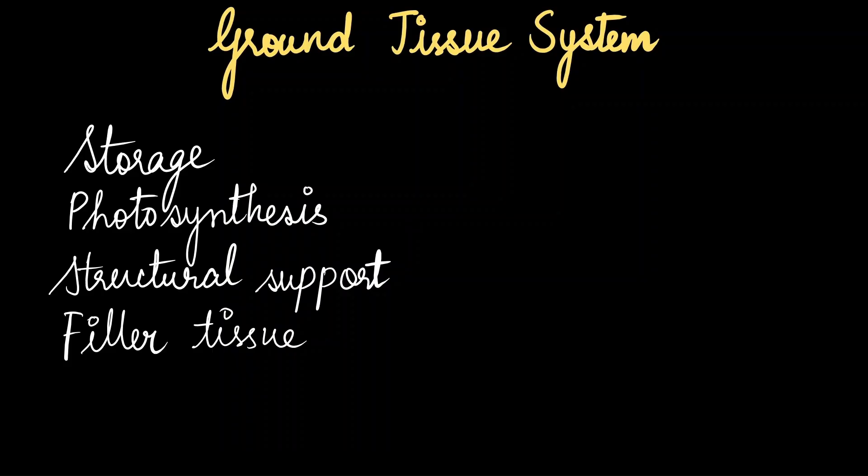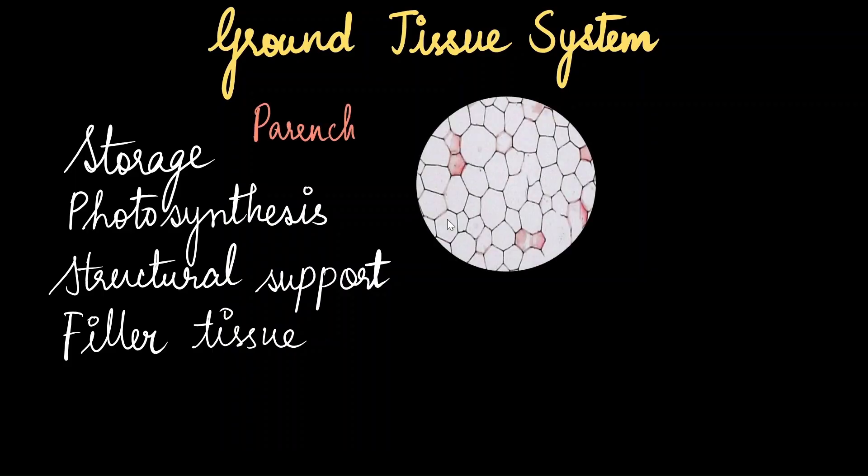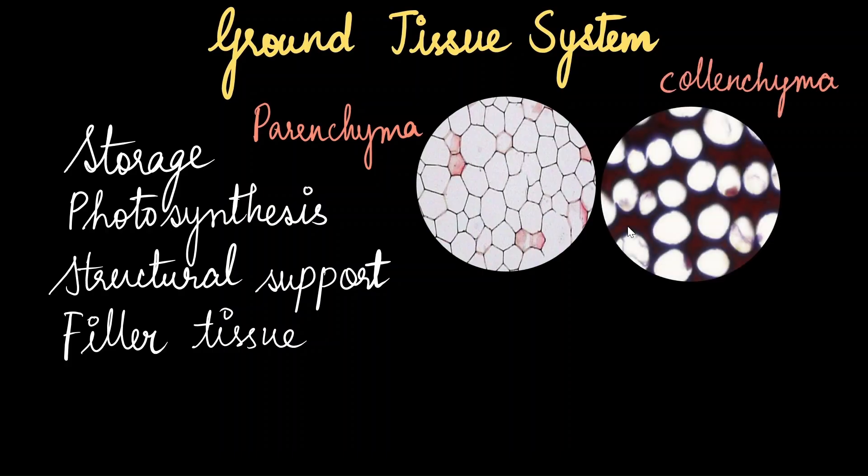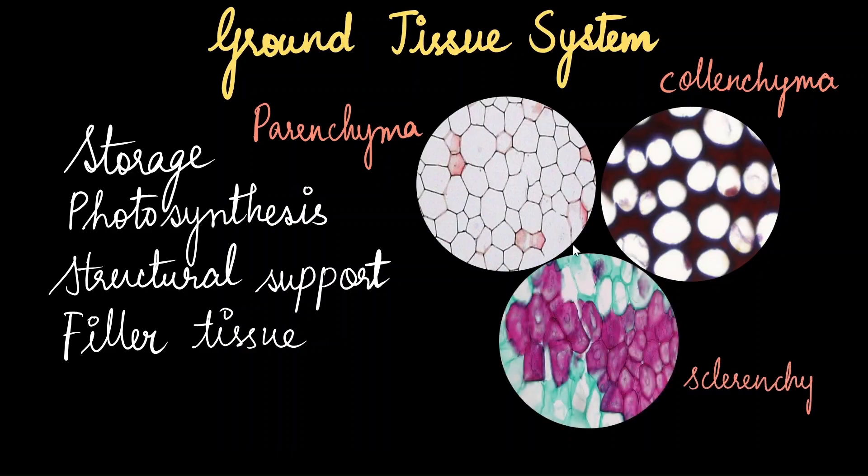Ground tissue systems have three cells within them. Parenchyma cells, which resemble the loose connective tissue within the human body. These cells are also flexible and responsible for repair functions. Collenchyma cells are like cartilage. They are flexible, but they support the growing parts. And sclerenchyma cells are like bones. They are rigid and they also provide structural support.